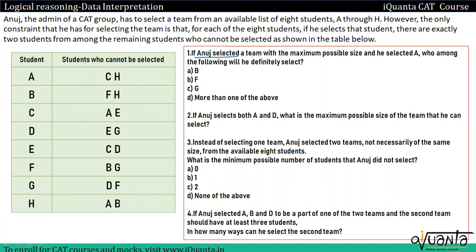If Anuj selected a team with a maximum possible size — first important point: maximum possible size — and he selected A, then he will select C and H. Who among the following will he definitely select?